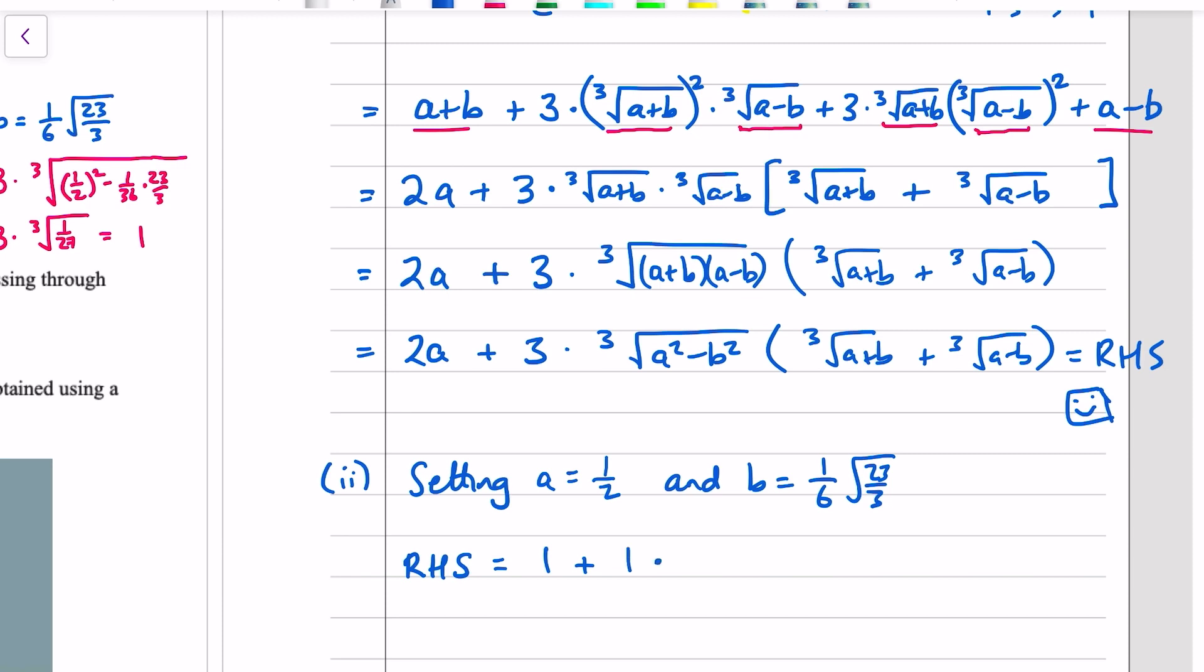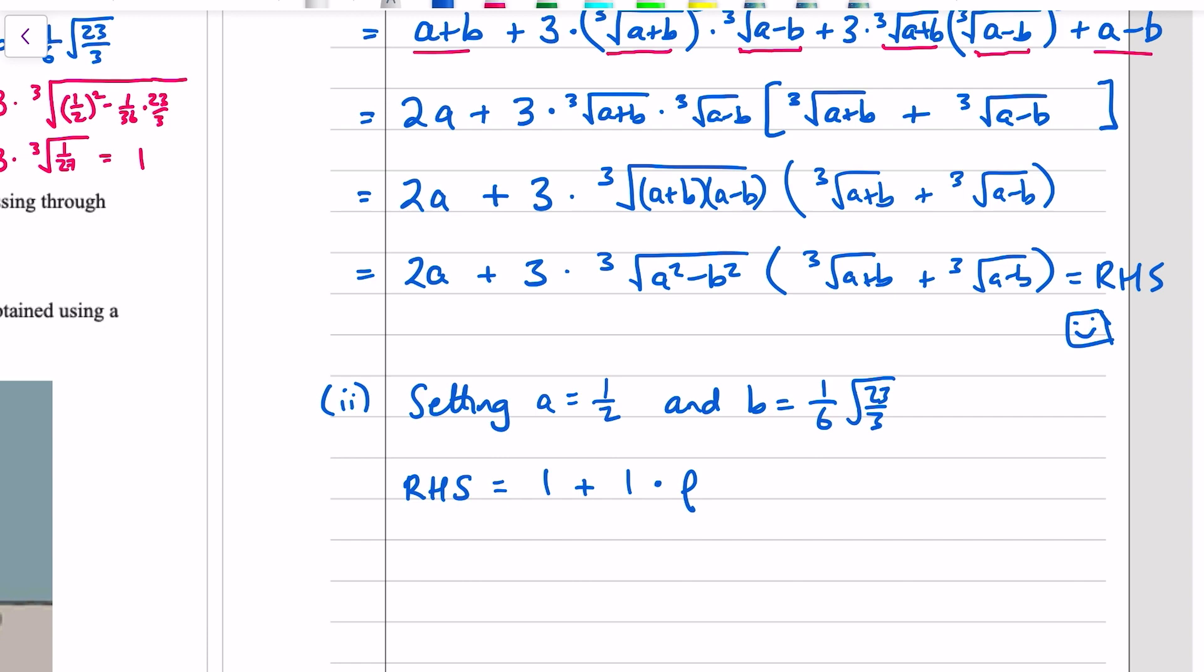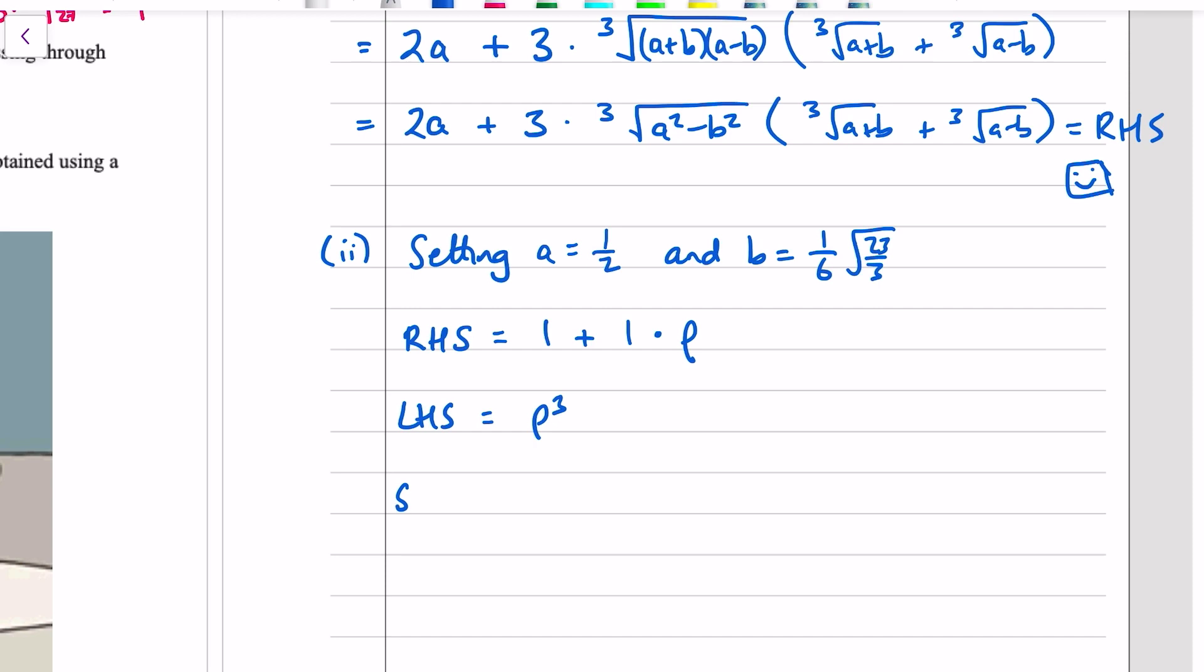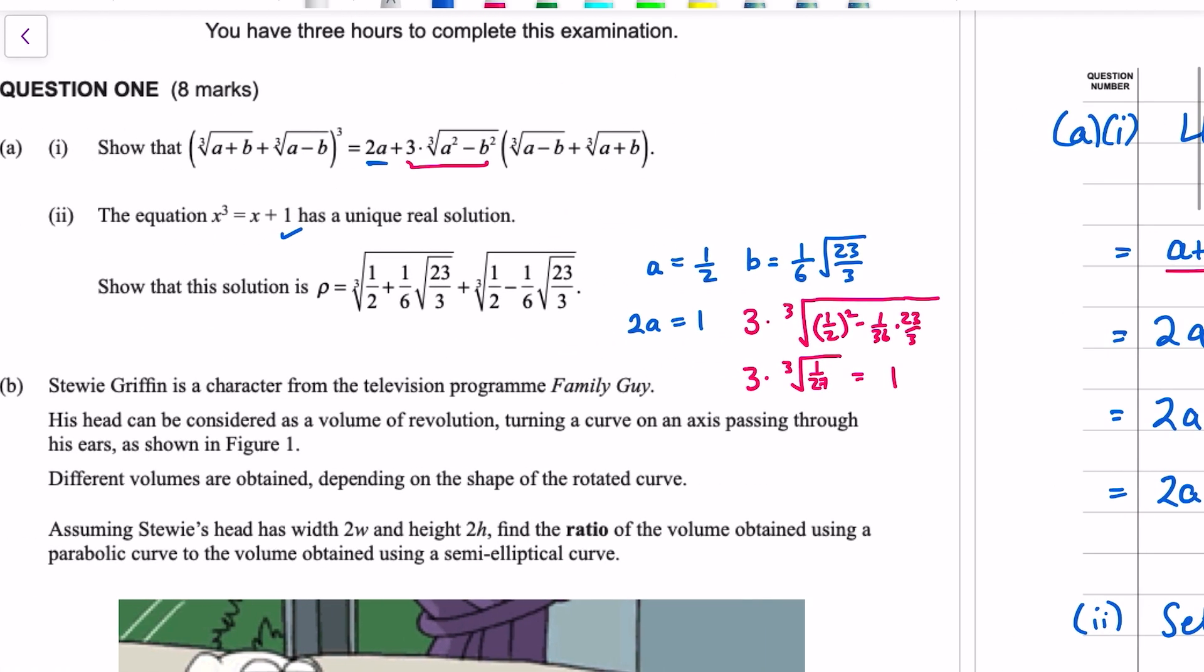So, setting a equal to a half, and b is 1 sixth of root 23 over 3, the right-hand side is equal to 1 plus 1 times rho. And the left-hand side is equal to root 23 over 3. It works in the identity, and it simplifies down to x cubed equals x plus 1, or rho cubed equals rho plus 1.